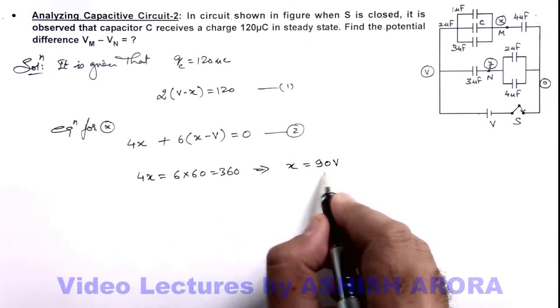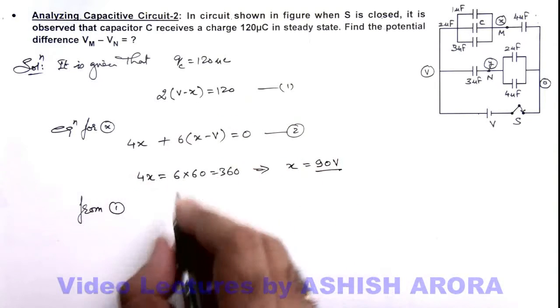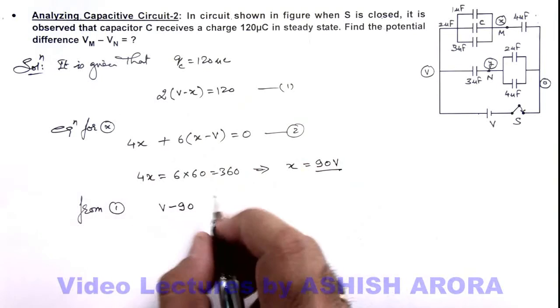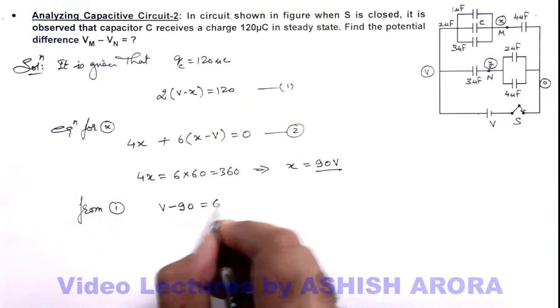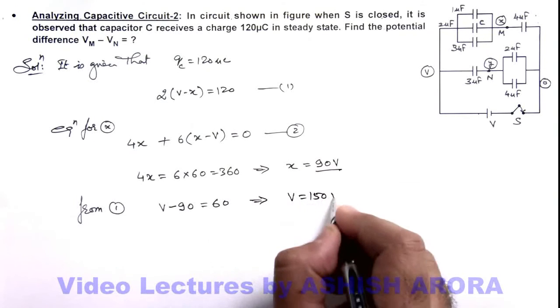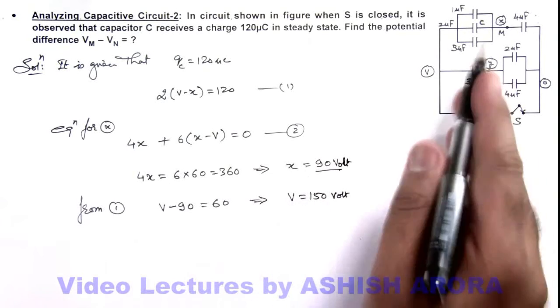If we have got the value of x from equation 1, we can substitute the value of x. So here V minus 90 is equal to 60, which will result the value of V that is 150 volt. So we have got the value of x as well as V.